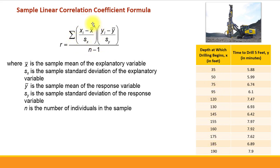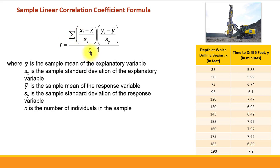You may recognize the expression inside the parentheses — it's the formula for computing a z-score. So we compute a z-score for each value of the explanatory variable and a z-score for each value of the response variable. Those two parentheses multiplied together are summed using sigma notation, and n in the denominator represents sample size.